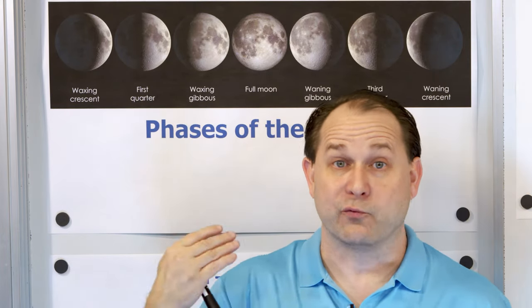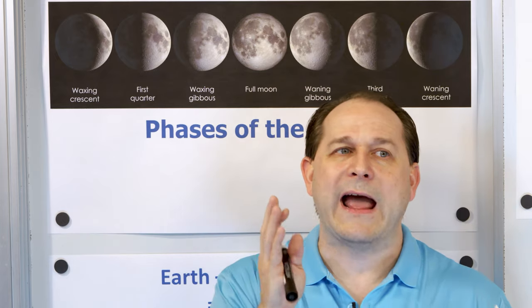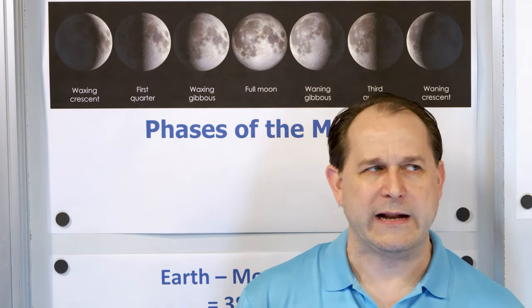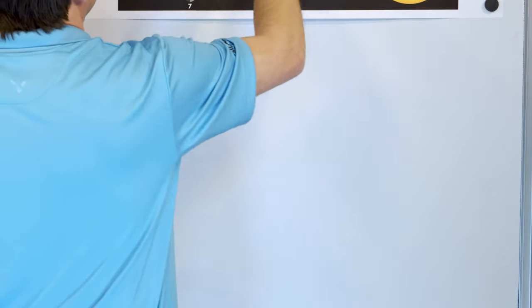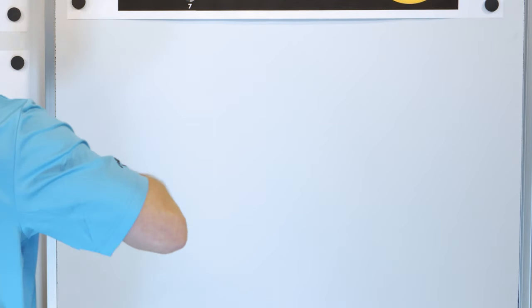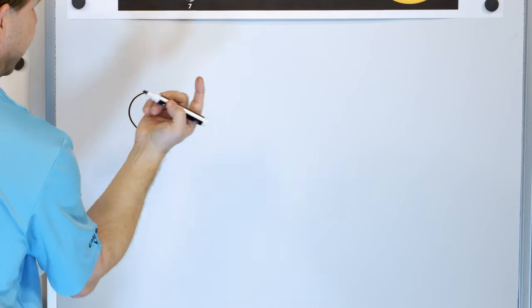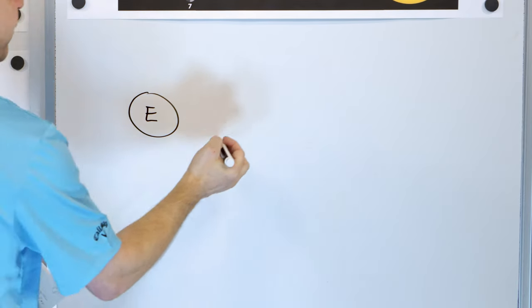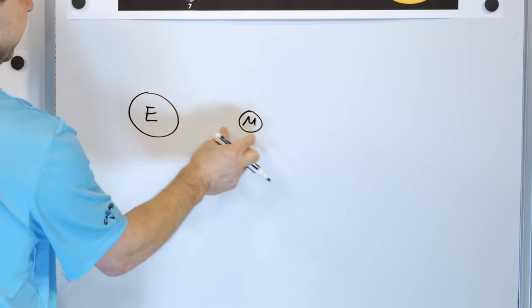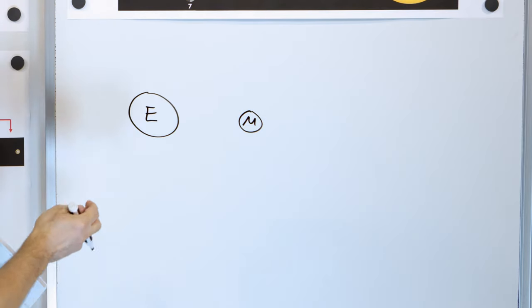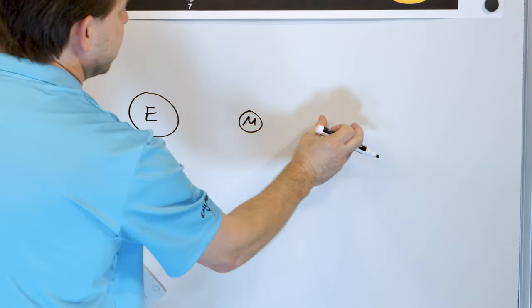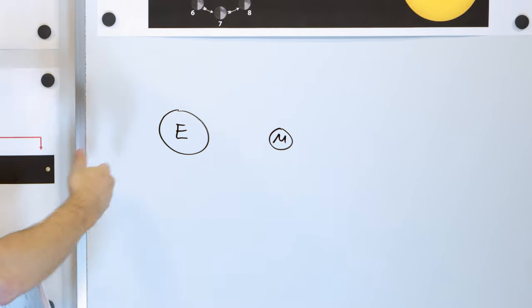Your mental image of our earth-moon system, along with the sun, is most certainly wrong — it was wrong for me, and it's wrong for everybody because we don't have a good way of measuring large distances in our mind. If I asked you to draw a picture to scale of the earth and the moon, most people would draw the earth as a big ball and then the moon relatively similar in size, not too far away — maybe just a few earth diameters away. This is completely wrong. The scale in our mind is totally wrong. Once you understand the scale, you can very easily understand the phases of the moon.